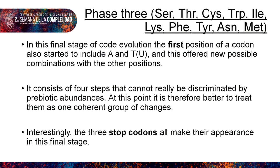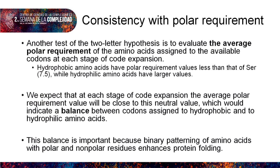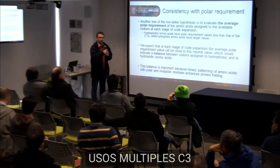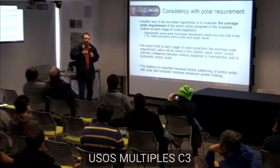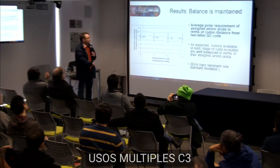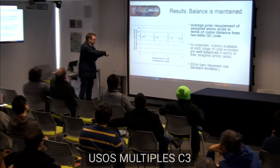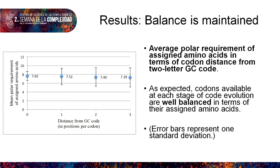Another consistency check is with respect to the polar requirement. The genetic code is designed such that there is a balance between hydrophobic and hydrophilic amino acids, which enhances protein folding. We would expect that stages of genetic code modification retain this balance. Going from the original GC code through one, two, and three position distances, we find that the neutral pH balance is indeed retained throughout these changes, which is what we'd expect in order not to disrupt protein folding.